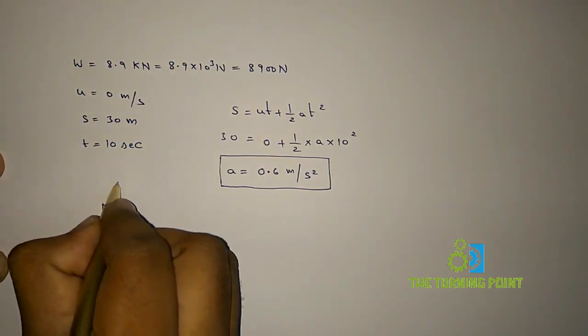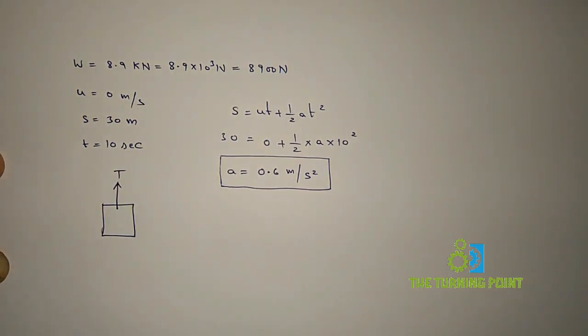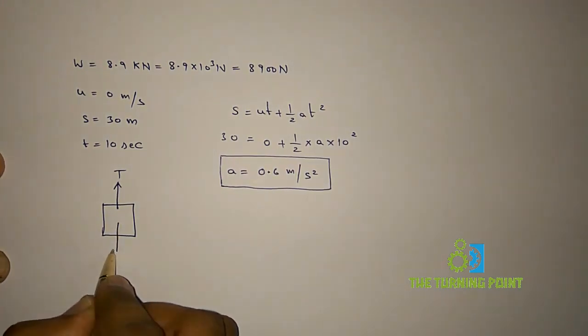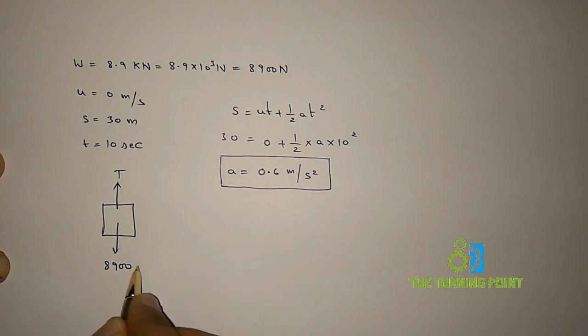It is lowered or raised by means of a string. So that string will be connected like this, and along the string there will be tensile force, let it be T. And the weight of the mine cage acts vertically downwards, and that is 8900 newtons.